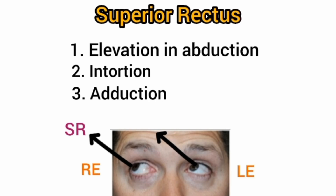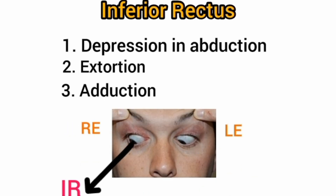The primary function of the superior rectus is to elevate the eye in the abducted state — when the eye is away from the nose. Its secondary function is intorsion of the eye, and its tertiary function is adduction of the eyeball. In the diagram, the eye is in an abducted and upward position, which is the action of the superior rectus.